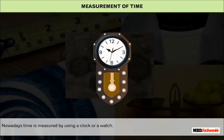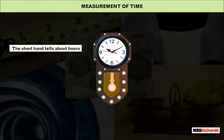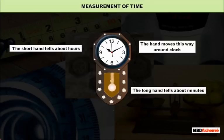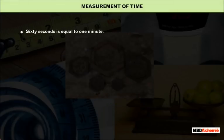Nowadays, time is measured using a clock or a watch. We measure time in seconds, minutes, and hours. The short hand indicates hours, and the long hand indicates minutes. For measuring long time intervals, units like day, month, or year are used.